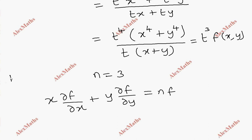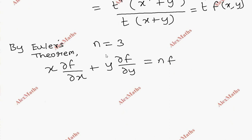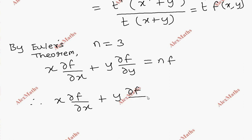This is by Euler's theorem. Now, in this case, we have degree 3. Therefore, x into ∂f/∂x plus y into ∂f/∂y equals 3f.